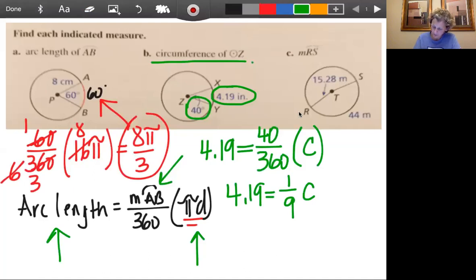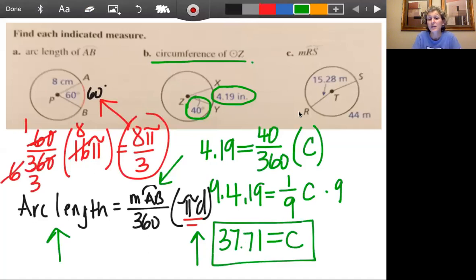How do I get C by itself? We're going to multiply both sides by nine. And C will equal, let's go ahead and finish this, nine times 4.19. Okay. So we get 37.71. That would be your circumference. So sometimes you're just given parts and you just plug it into the formula. All right.